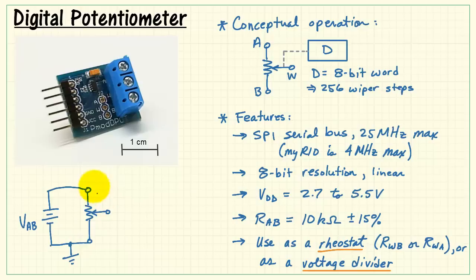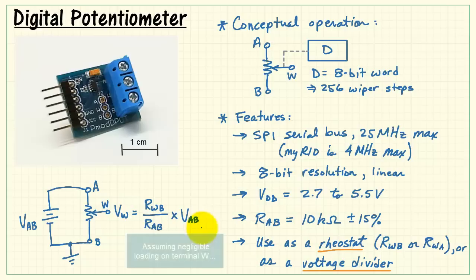If we take the two end terminals A and B and connect a voltage across those terminals, then the wiper terminal has a voltage VW, which is equal to the point-to-point resistance between W and B, that's RWB, divided by the end-to-end resistance RAB, multiplied by the voltage applied across terminals A and B. Now this equation assumes that you have negligible resistive loading on terminal W. That's an important requirement.